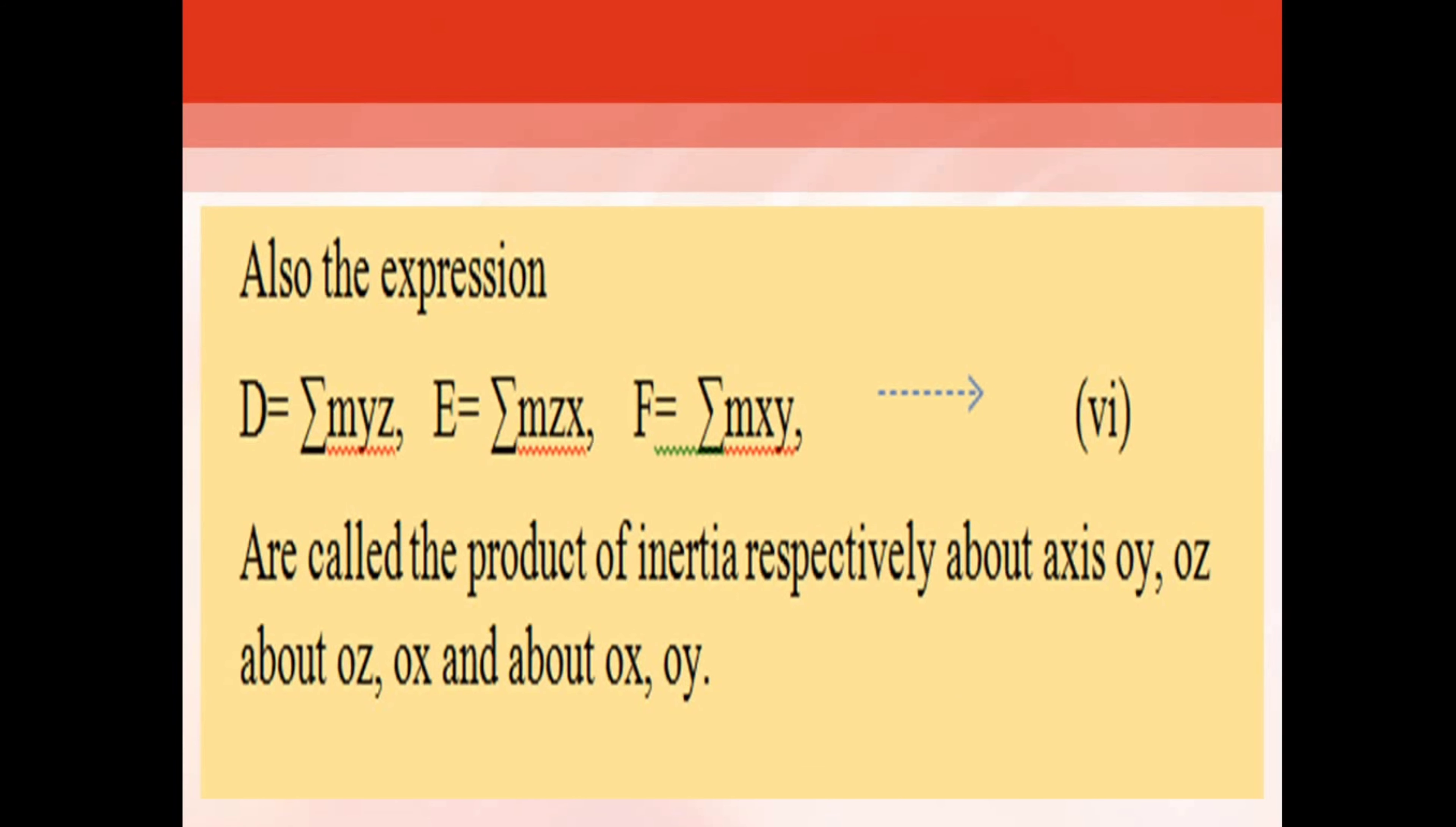Also, the expressions D = Σmyz, E = Σmzx, F = Σmxy, equation (vi), are called the products of inertia respectively about axis oy, oz; about oz, ox; and about ox, oy.